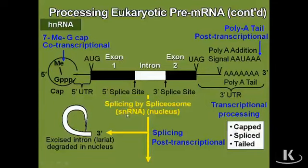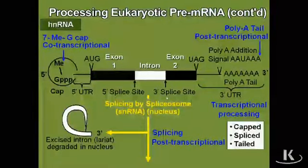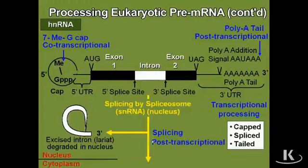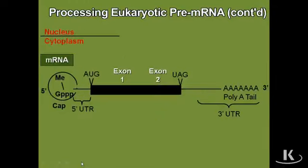This introduces us to another type of RNA: snRNA, which stands for small nuclear RNA. Along with proteins called snRNPs — small nuclear ribonuclear proteins — snRNA and snRNPs come together to form the spliceosome, accomplishing the task of removing the intron from the messenger RNA molecule. Remember, this happens within the nucleus. Eventually, the messenger RNA goes out into the cytoplasm to be translated.